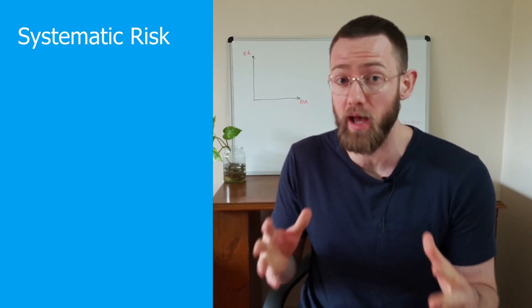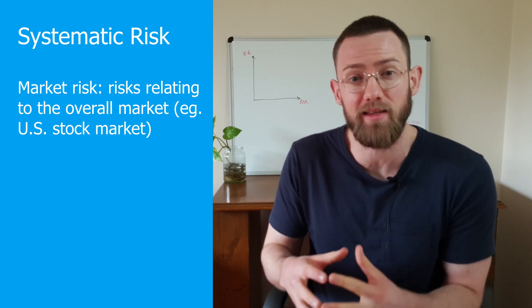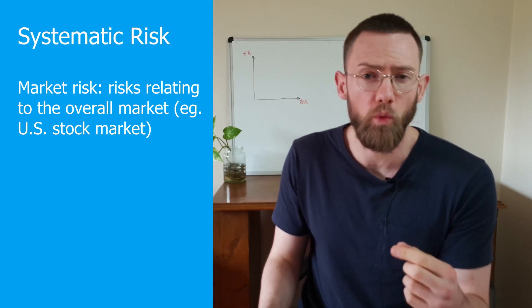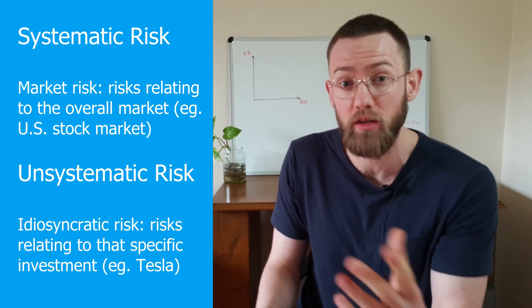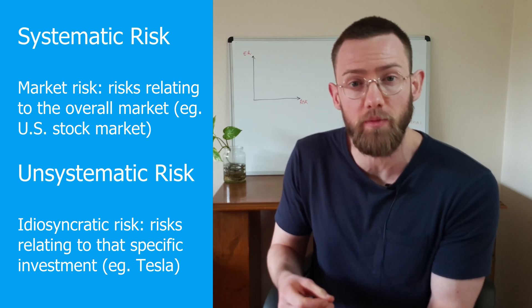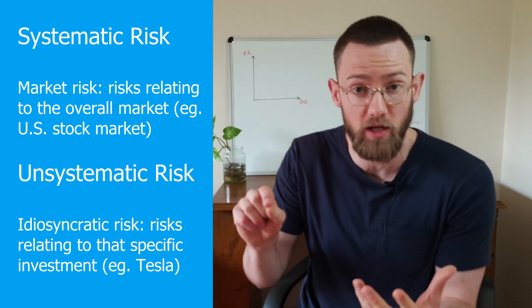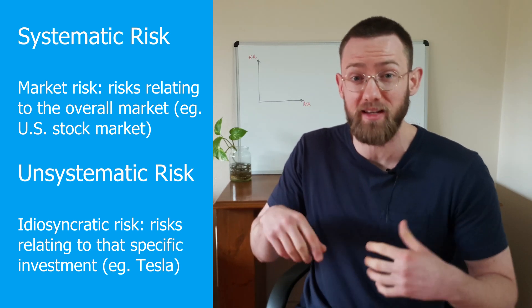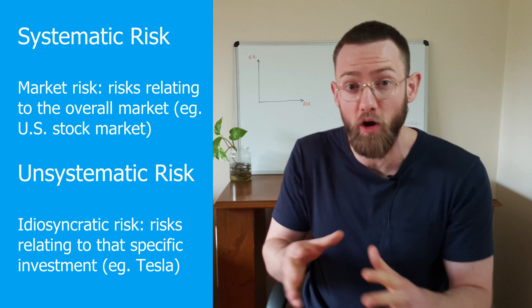Modern portfolio theory considers two main types of risk. Number one is systematic risk, which is basically the market risk of our investments. For example, buying stocks has market risk associated with investing in the stock market more generally. Then there's the second component: unsystematic risk — the specific risks associated with a particular stock, such as competitors, the likelihood of disruption, and other company-specific risks. That individual stock carries not just its own unsystematic risk, but also the broader market risk of the entire stock market.